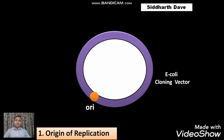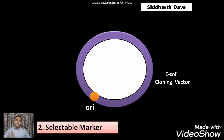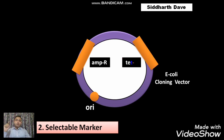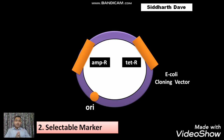The second feature is the selectable marker. This E. coli cloning vector has two selectable markers: the first is the ampicillin-resistant gene, and the second selectable marker is the tetracycline-resistant gene. If this plasmid has both antibiotic-resistant genes, it means ampicillin and tetracycline will have no effect on it, because it has the ability to resist those antibiotics. These selectable markers are helpful in identifying and eliminating non-transformants and selectively permitting the growth of transformants.